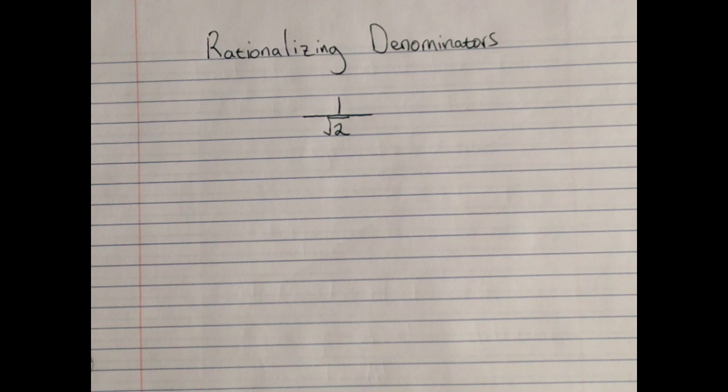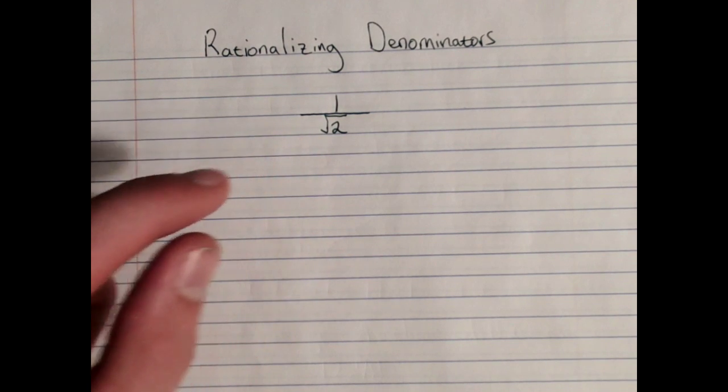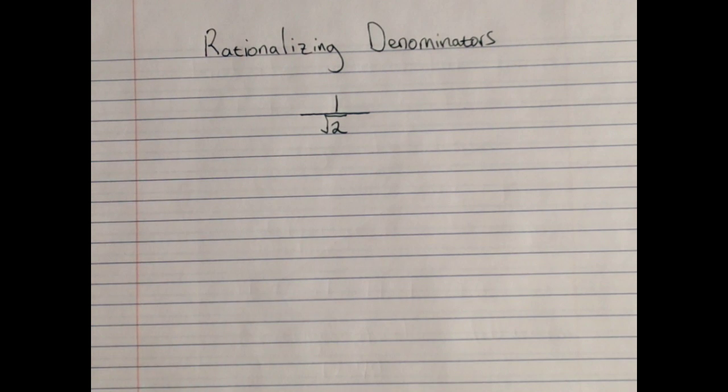One of the things that we have yet to cover that we're going to need to cover is rationalizing denominators. For whatever reason, mathematicians have decided that having a square root in the denominator is usually undesirable, so we've got a technique for dealing with that.